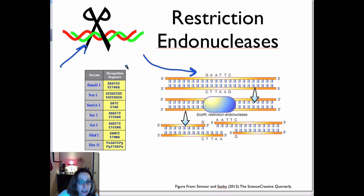This table right here shows you what the recognition sequences are for some of the common restriction endonucleases or restriction enzymes. So the enzyme BAMH1 will recognize the sequence GGATCC. The NOT1 restriction endonuclease will recognize a larger, longer sequence, GCGGCCGC.